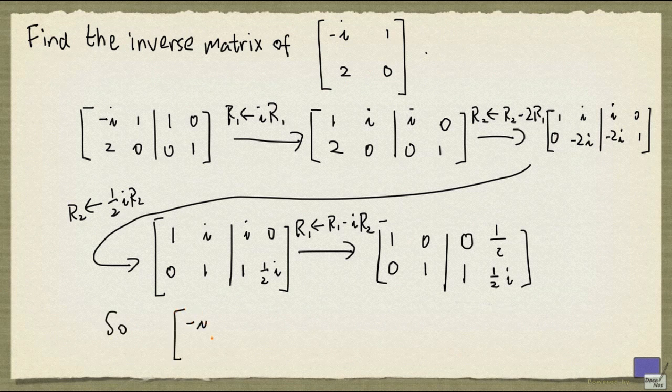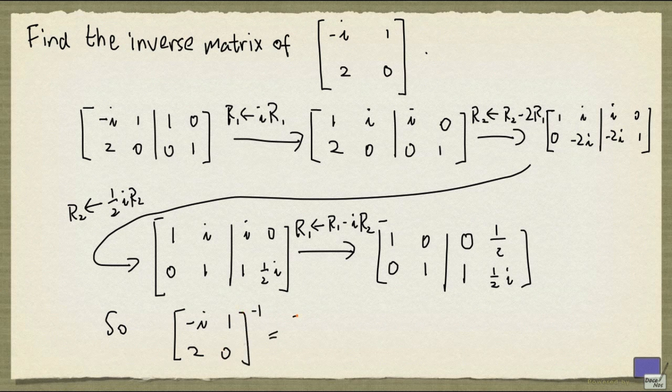So the inverse of minus i, 1, 2, 0 is 0, 1 half, 1, 1 over 2 times i.